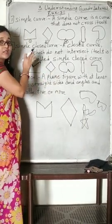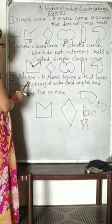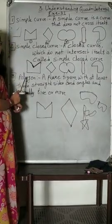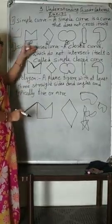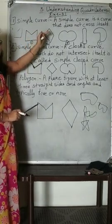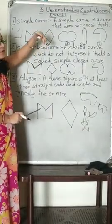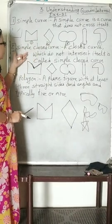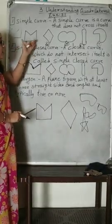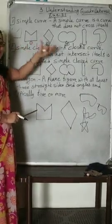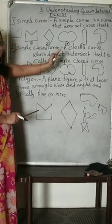Next is the polygon. In simple curve and simple closed curve, what you have to remember: in a simple curve, it should not cross itself. And in a simple closed curve, it should not intersect itself — that is called a simple closed curve.